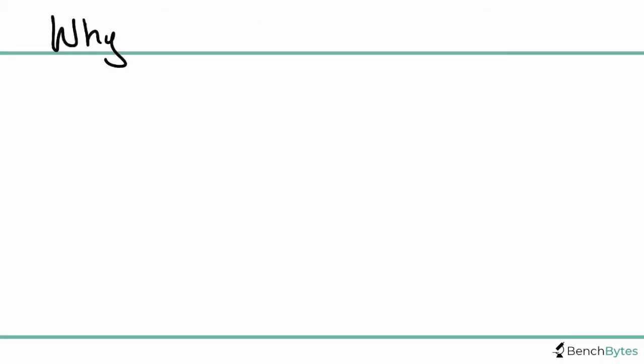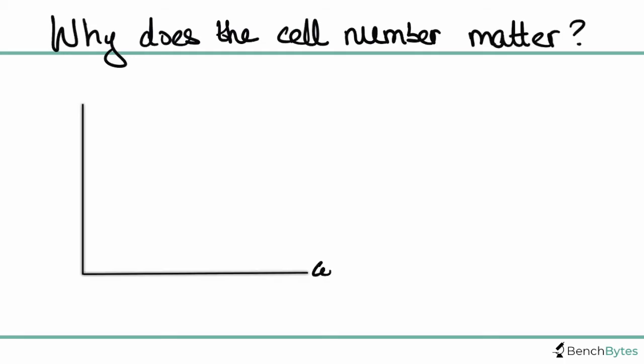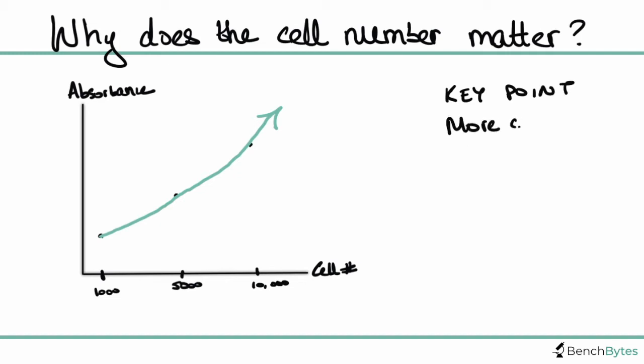I want to take a minute to talk about why the cell number matters so much in these assays. Let's imagine we plated out multiple different numbers of cells, starting at maybe 1,000 and going to 5,000 and then 10,000. Each of these cell numbers is going to reduce the formazan just a little bit more. At 1,000 you'll have relatively less purple, but at 10,000 you'll have huge amounts of purple. So any variation in your cell number is going to change your assay independent of whatever drug or treatment you're actually trying to test. That's why it's important to really control for that number of cells.